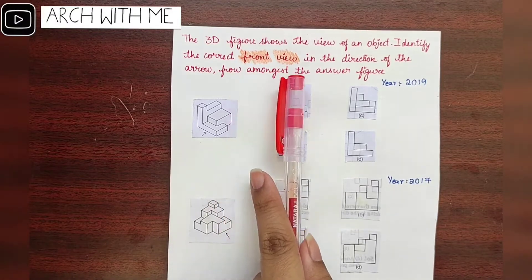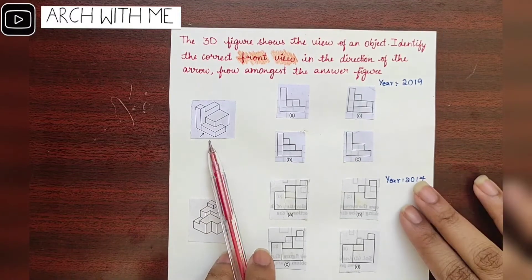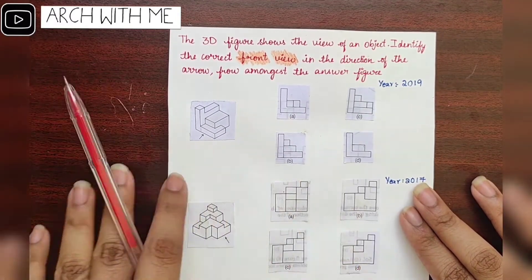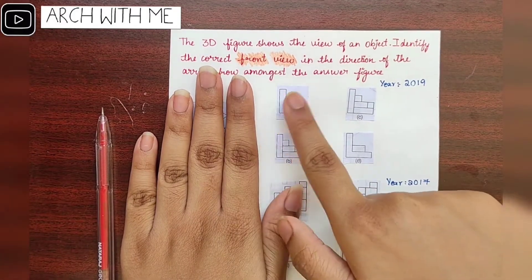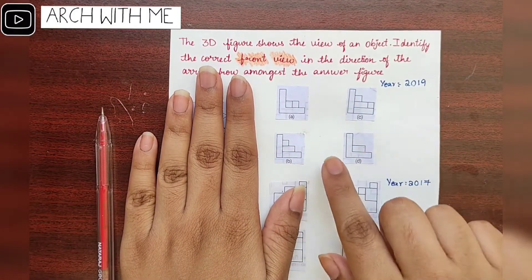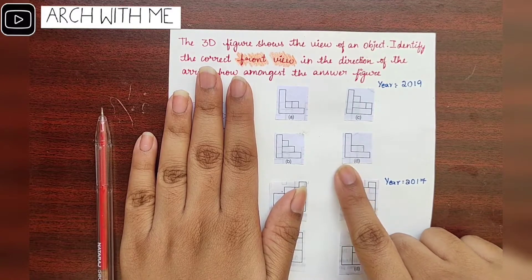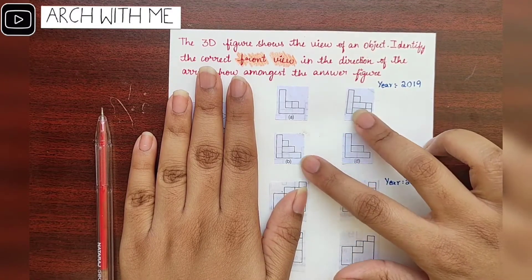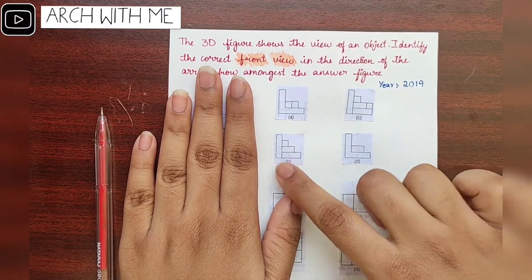So first we start with front view questions. What you should do is observe — start observing the options. Close the question first and start observing, and search for that option which is different from others. Here option C and option B are different when comparing to A and D.